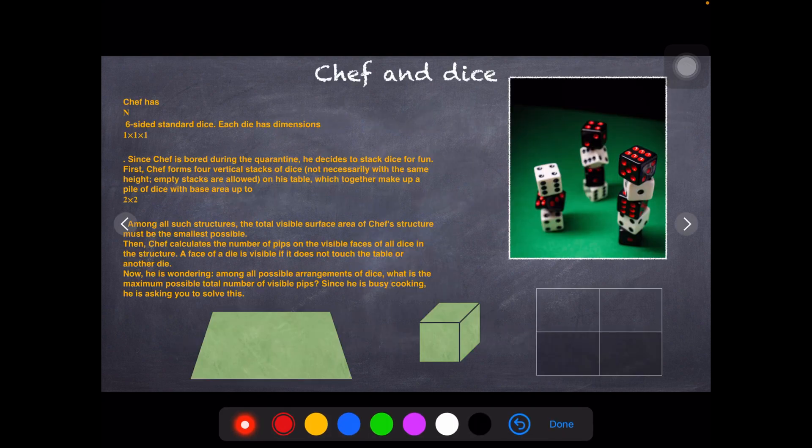The Chef has n six-sided standard dice. Each die has a dimension of one by one by one. Since Chef is bored during quarantine, he decides to stack dice for fun. This is what they mean by stacking dice.